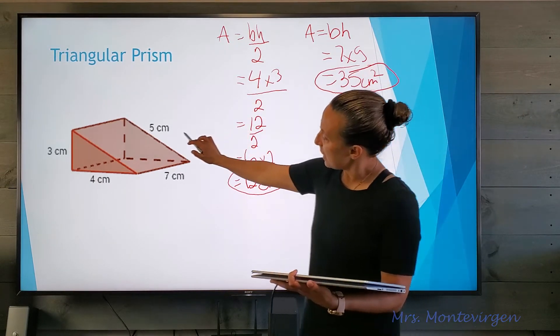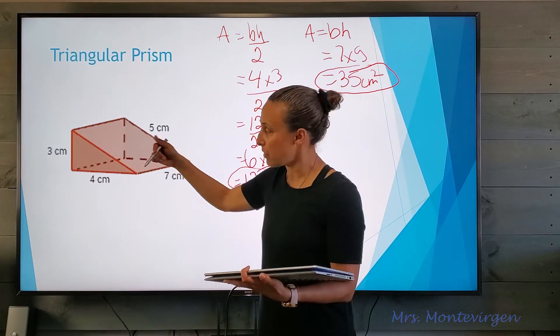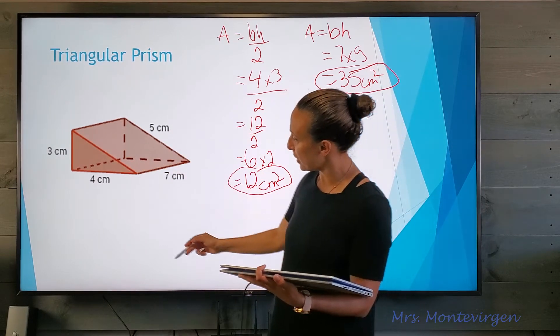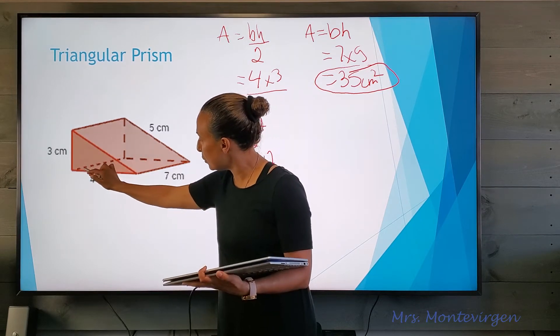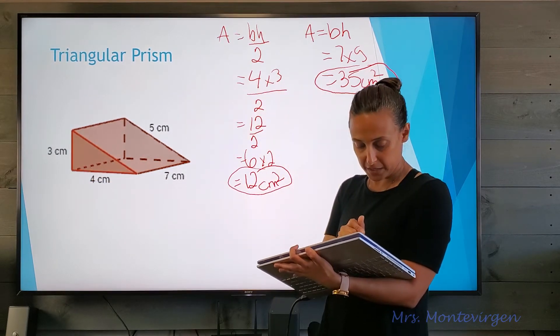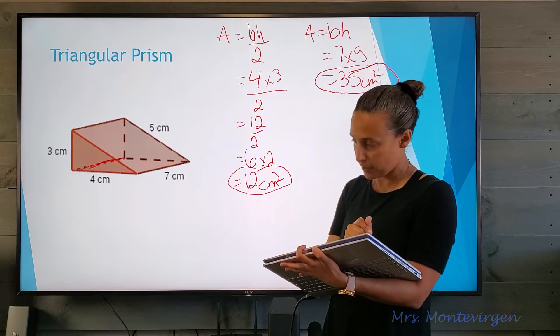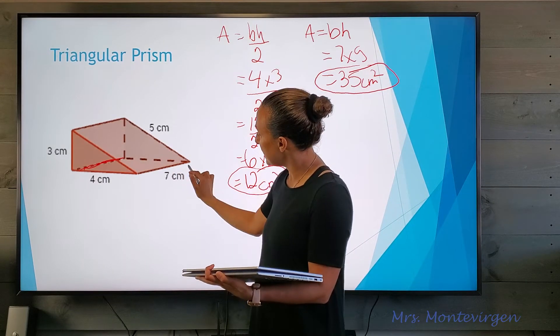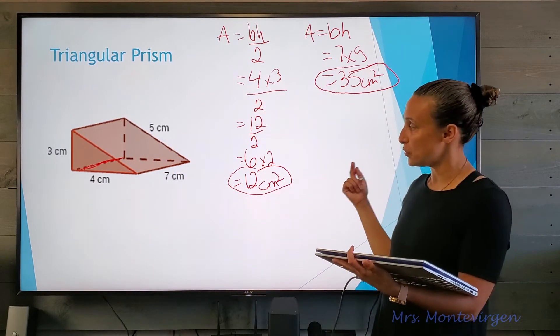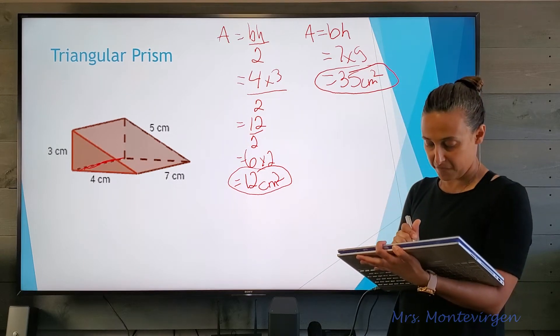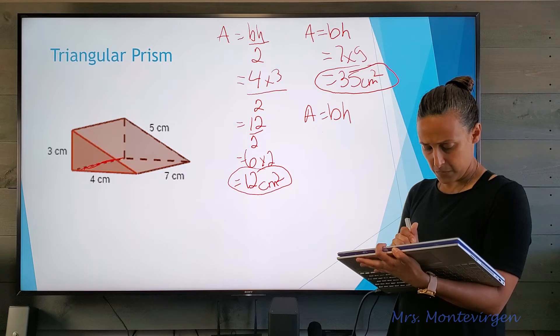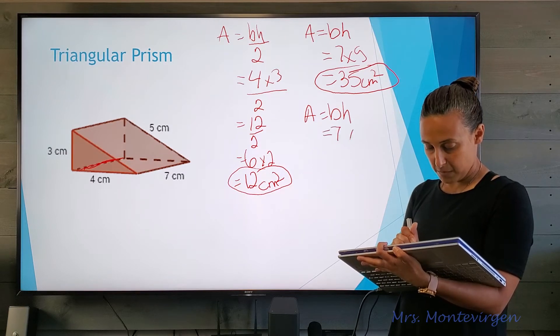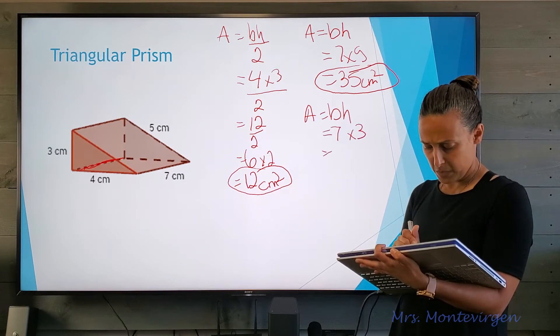Now I'm going to do the back part of this triangular prism. I have the three here, but my other dimension is this part here where it's dotted. I'm just going to put a little line here and that dimension I see is seven. So again base times height, seven times three. My answer is twenty-one square centimeters.